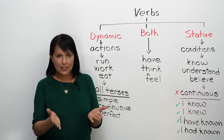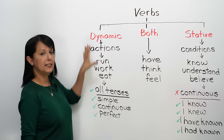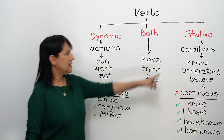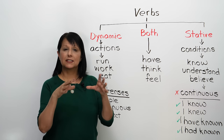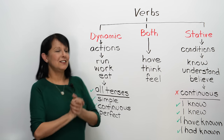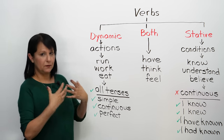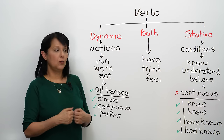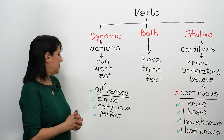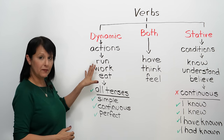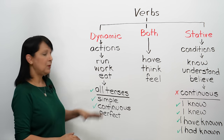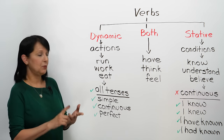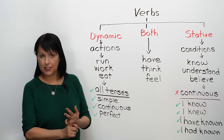Now, what does that mean? Most verbs in English are what we call dynamic — that means they refer to actions. But stative verbs refer to states or conditions. The dynamic verbs refer to actions, for example, run or play, or work and learn, or eat and drink. These are actions. And what's important with these dynamic verbs, which are most of the verbs in English, is that we can use them in all the tenses — the simple tenses, the continuous tenses, or the perfect tenses.